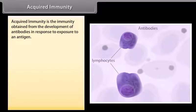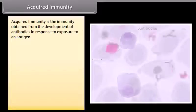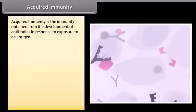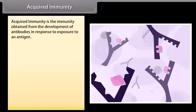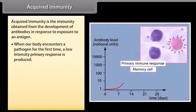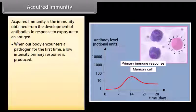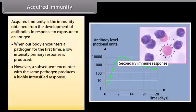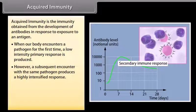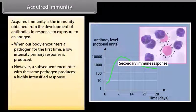Acquired immunity is the immunity obtained from the development of antibodies in response to exposure to an antigen. When a body encounters a pathogen for the first time, a low-intensity primary response is produced. However, a subsequent encounter with the same pathogen produces a highly intensified response.